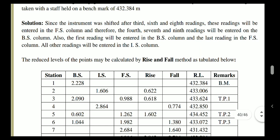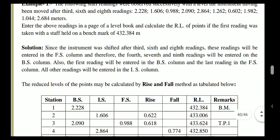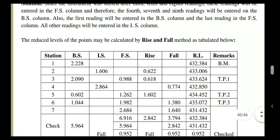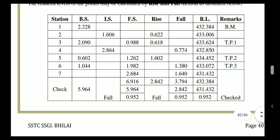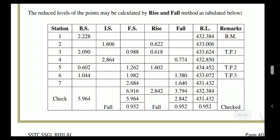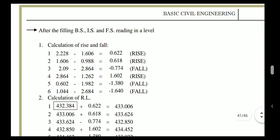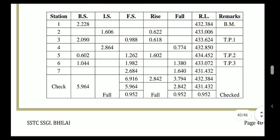At station 1, the benchmark RL of 432.384 is given. We will solve this using the Rise and Fall method. In this method, we do not need to find the height of instrument repeatedly. Instead, we subtract consecutive staff readings to determine if the next station is higher or lower. For station 1: 2.228 minus 1.606 gives a positive difference of 0.622, which is a rise, noted in the rise column.